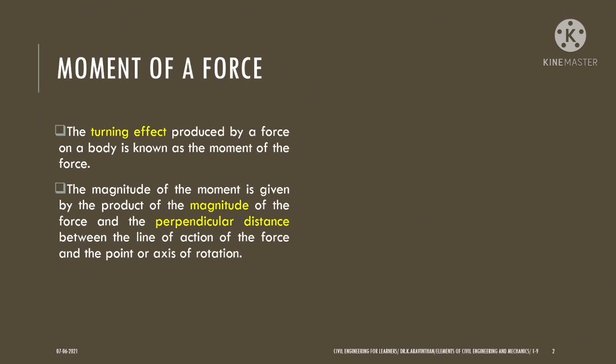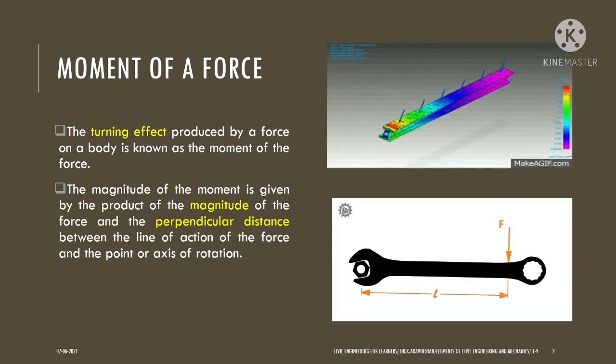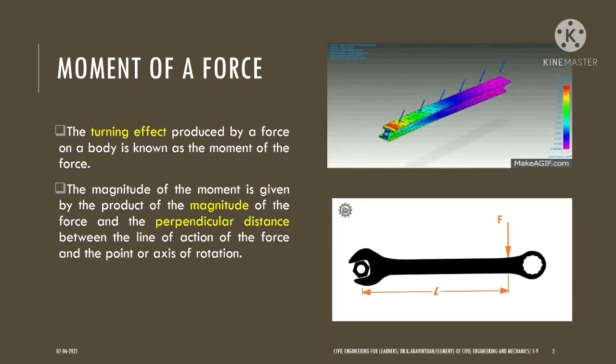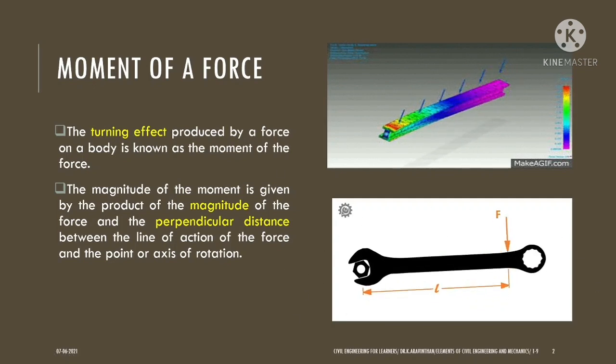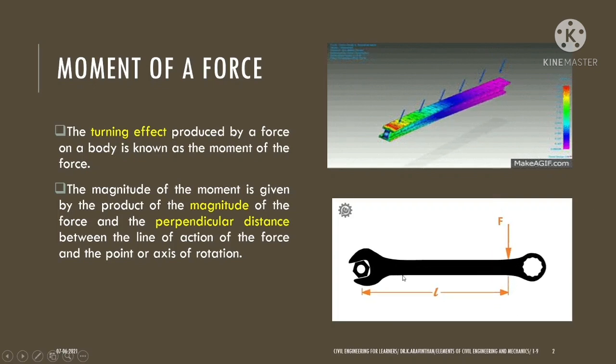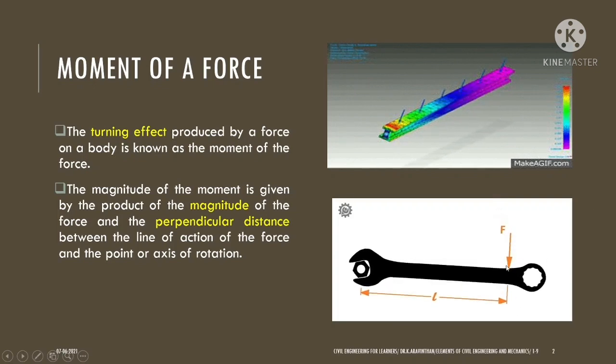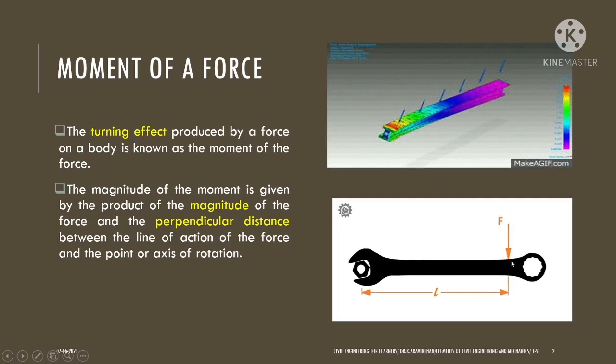When we talk about a non-concurrent force system, that is when a force is not acting at a point. A concurrent force system is where a force acts exactly at the point — it may be towards the point or away from the point. In a non-concurrent system you can see a force acting in a single plane, that is a coplanar system, with the force acting away from the point. This creates a moment.